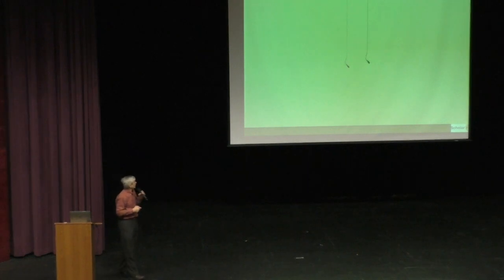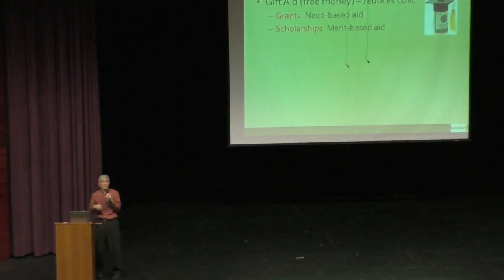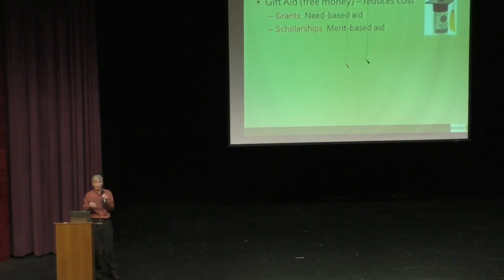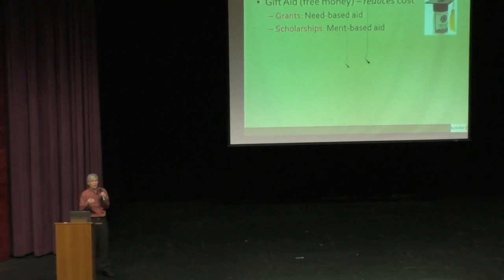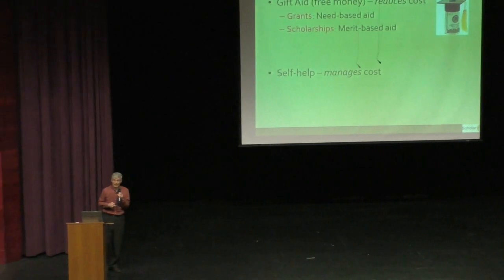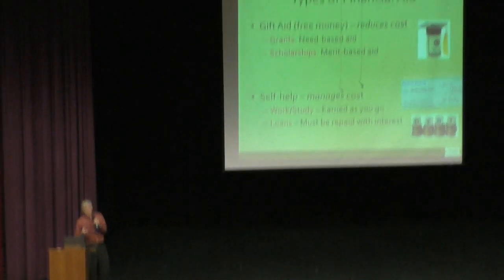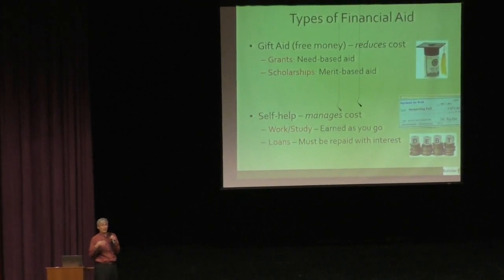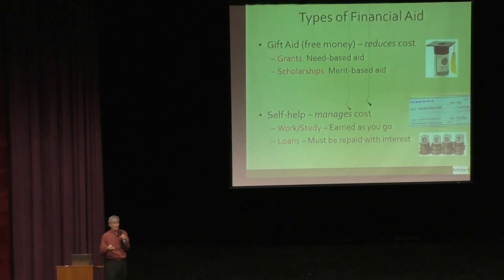There are two basic categories of financial aid. One is gift aid — free money you receive to pay for college with no strings attached and no repayment required. It's usually called either grants, which refers to need-based aid, or scholarships, which refers to merit-based aid based on the student's academic profile. The other type is self-help, which includes work-study — a job a student gets during college — or loans that have to be paid back after college.